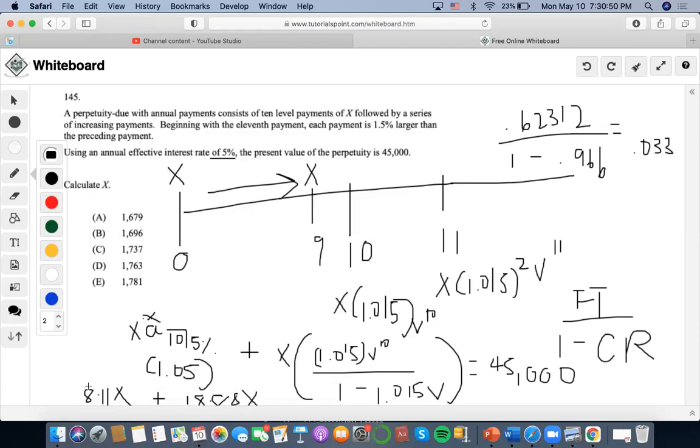Now, I'm going to add this back to 8.11. I'm going to get 26.99X, and I'm going to find what X is. So I'm going to do 45,000 divided by 26.99, and I get that X is 1,667.28, which would be closest to answer A.